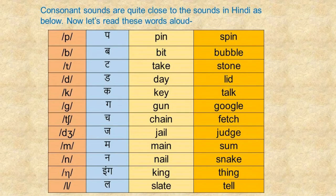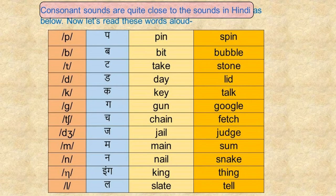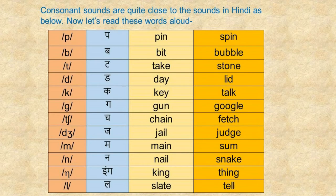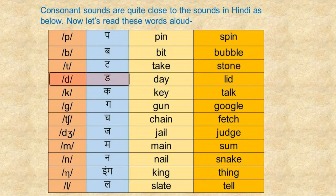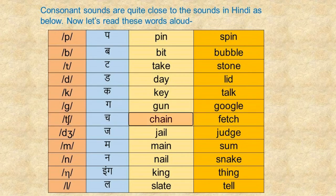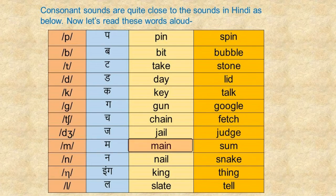Of those 44 sounds, 24 are consonant sounds. Now look at these consonant sounds — they are quite close to the sounds in Hindi. Let's read these words aloud: chain, fetch, jail, judge, ma, main, sum, na, nail, snake, ing.